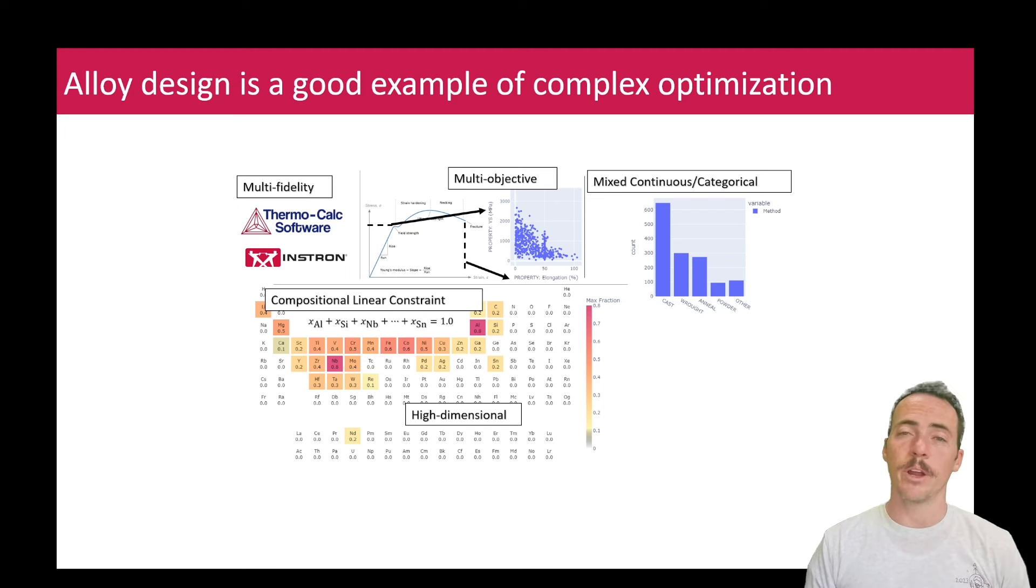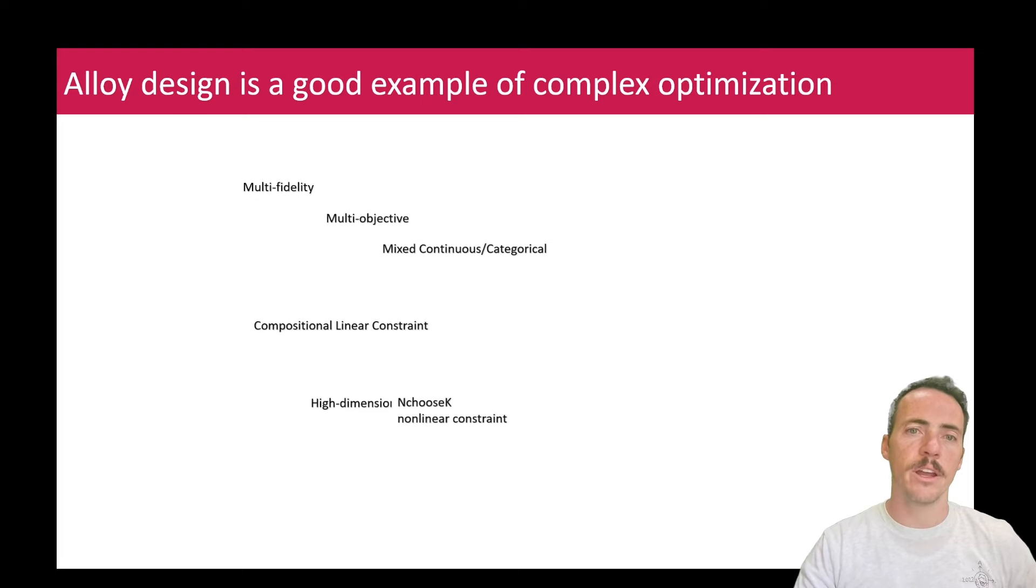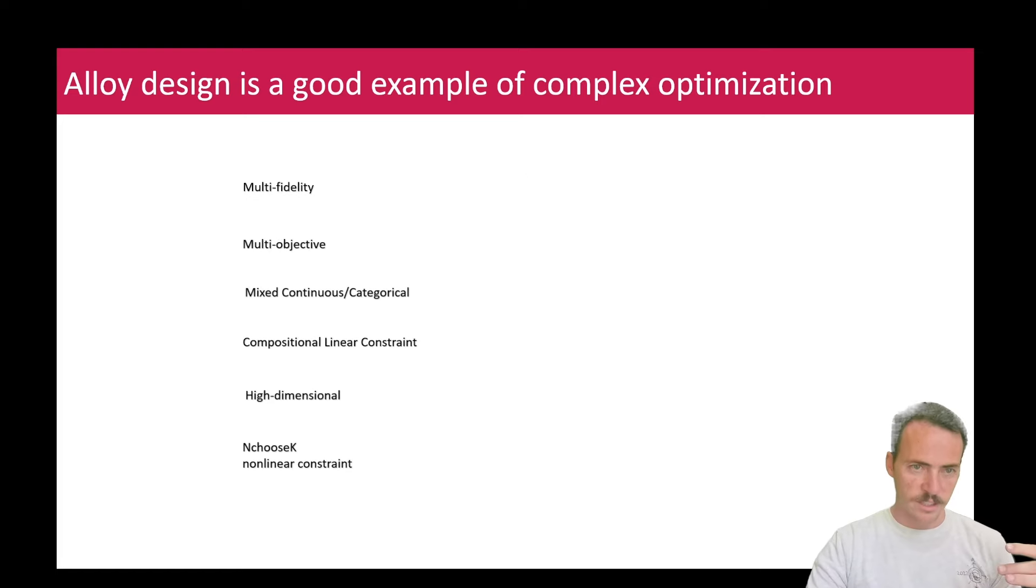And we're very often high-dimensional, right? You can have not just two or three different elements, but 10, 11. You can have lots of different elements present in your alloy. And then finally, sometimes we say, okay, well, it has to have this base alloy, and we identify it. But then we say, but we're going to allow it to swap out one additional component from many different ones that are available. We call that an n choose k nonlinear constraint. So all of those things together make optimization hard, right?